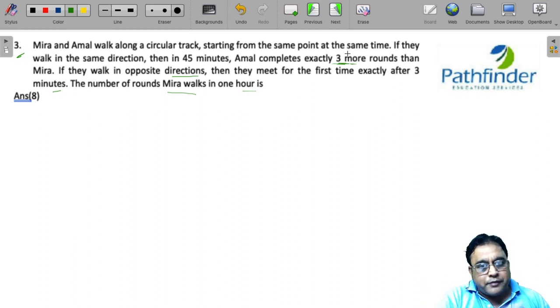So, in one of the data, you are told the number of rounds extra walked by Amal. And in the next case, you are told that after how much time will they meet for the first time if they are walking in opposite directions.